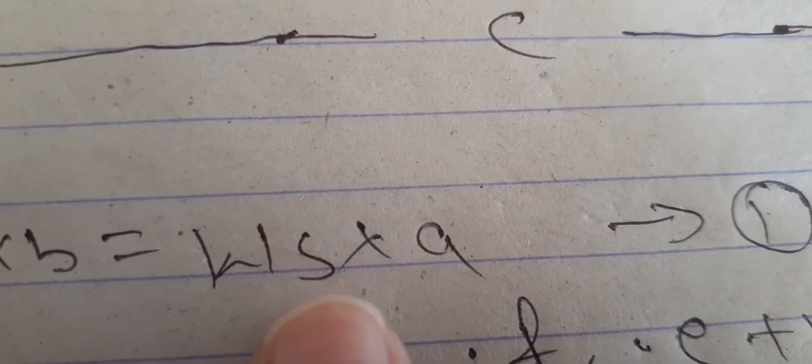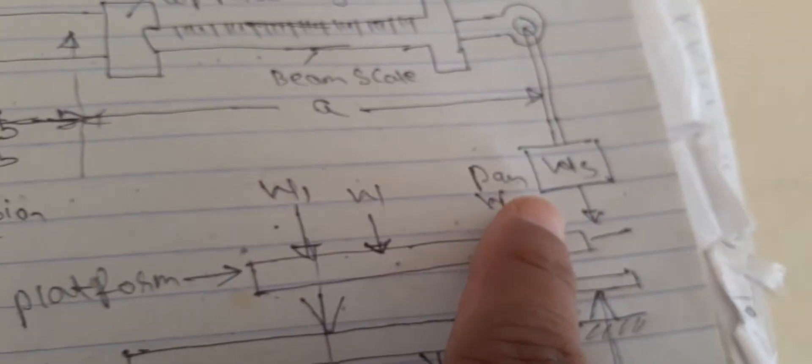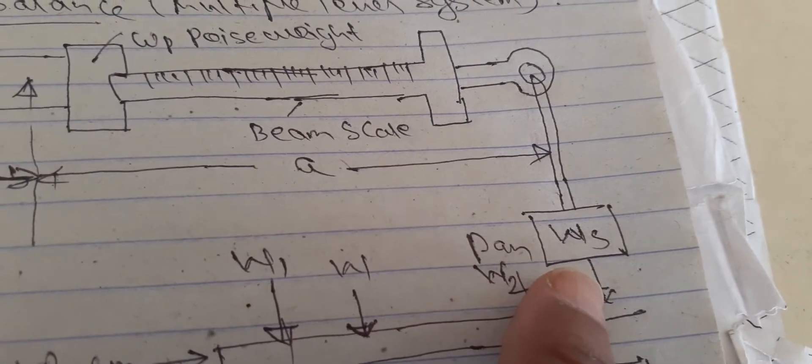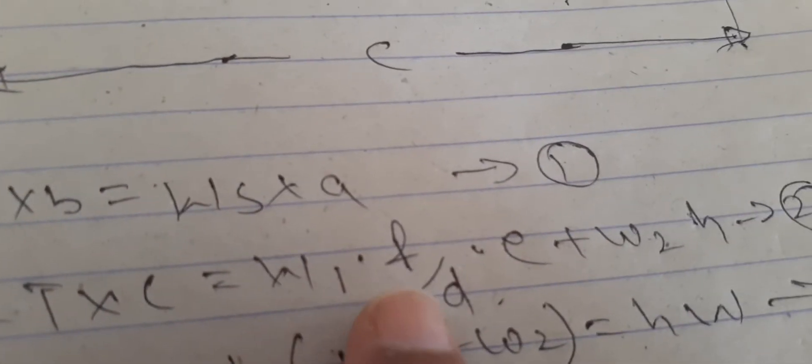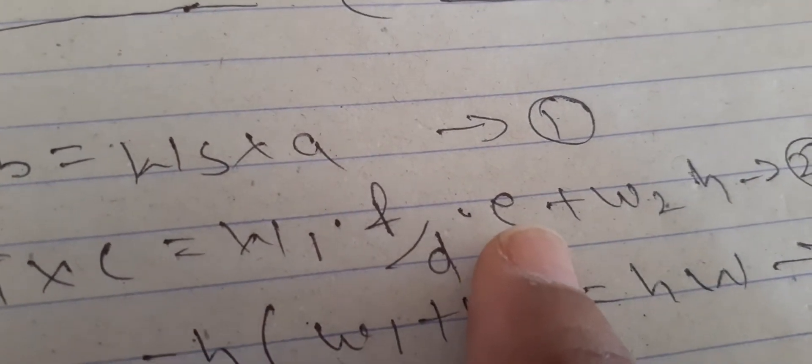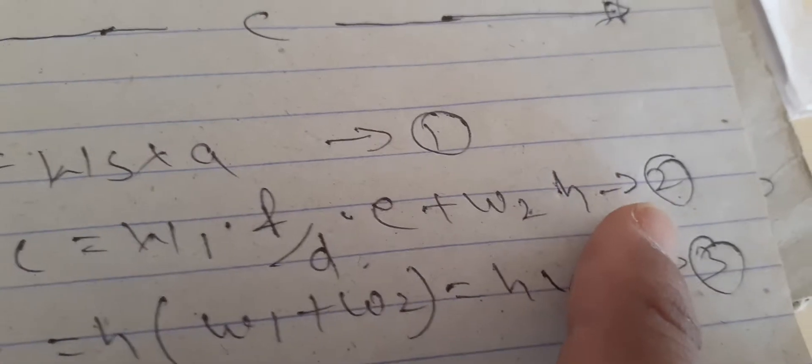Next, coming to balancing of equation. T into b equals W suffix s into a, that is first equation. How it comes? Tension T into b equals W suffix s into a. Second equation: T into c equals W1 into f by d into e plus W2 into h. This is second equation.